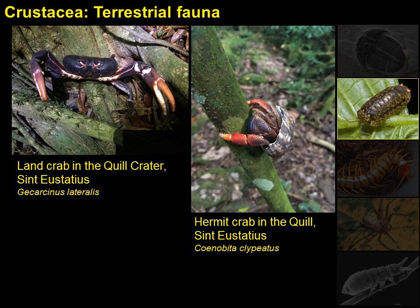Many crabs are amphibious to some extent, able to spend time on dry land. Some have evolved to live predominantly on land but still need to return to the water for reproduction. A few land crabs have direct development and do not need to return to the water for reproduction. Hermit crabs are similarly amphibious, and a few species have also evolved to live predominantly on land, but these require periodic access to water to maintain functional gills and for reproduction.